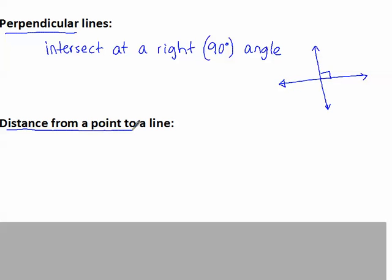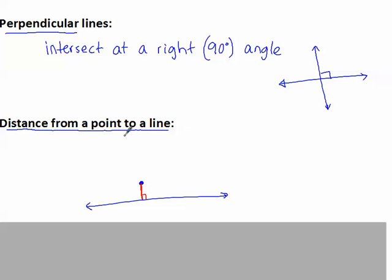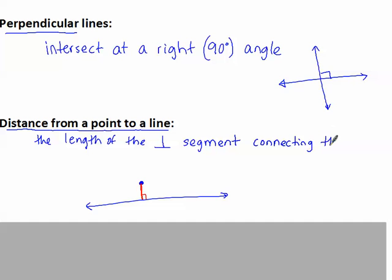The distance from a point to a line — what does that look like? If I have a line and I draw a point, and I want to go from this point to this line the shortest way possible. Does that mean we're just going to go at any angle we want? Well, that's a long trip. The shortest trip is straight there — at a right angle, so perpendicular. The distance from a point to a line is the length of the perpendicular segment connecting the point and the line.